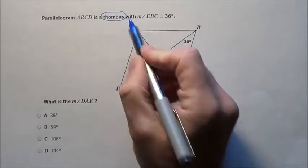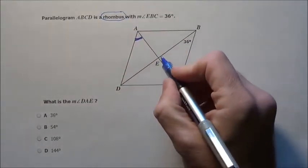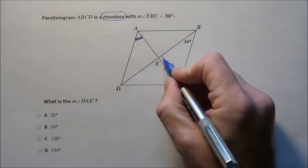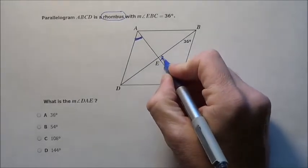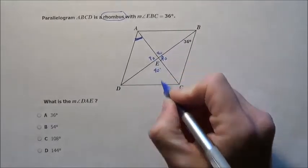the key is they tell you that it's a rhombus. A rhombus has many special things. One, the rhombus is the guy that intersects at 90 degree angles. So right away I know that's 90, 90, 90, and 90.